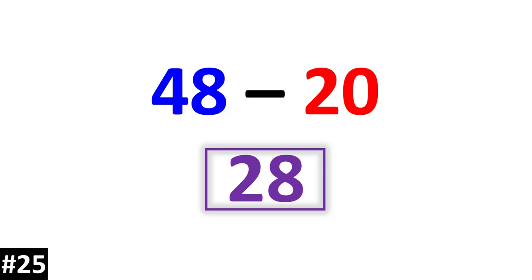So as you can see, we can easily subtract any two-digit number by 10s by first just subtracting from the 10s column, and then by keeping the ones digit the same.